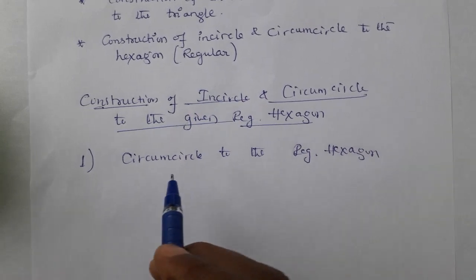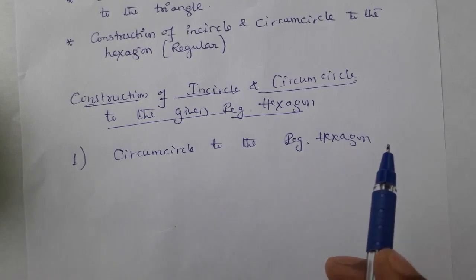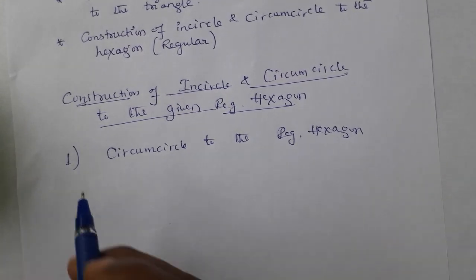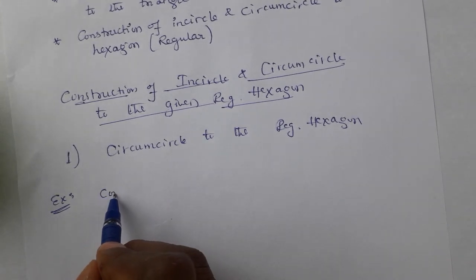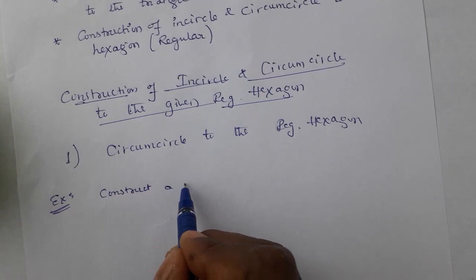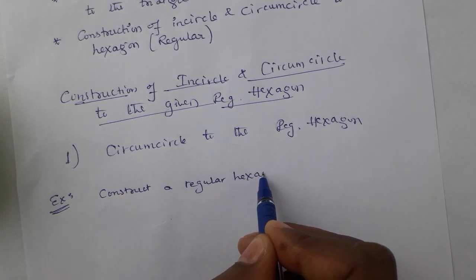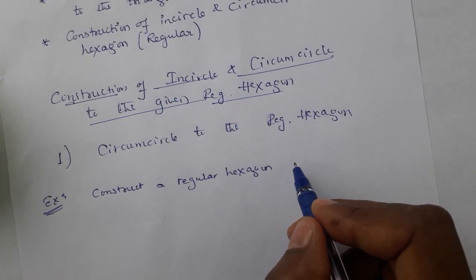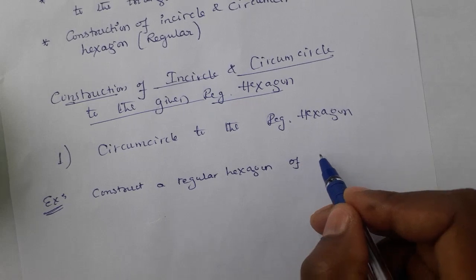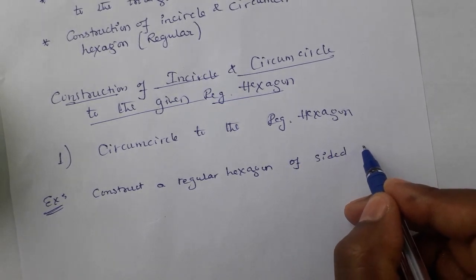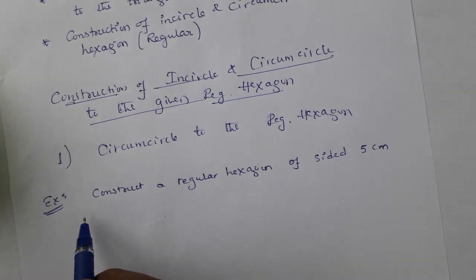So we go to the construction of incircle and circumcircle to the given hexagon. First we will learn about circumcircle to the regular hexagon. Example problem: Construct a regular hexagon of side 5 cm.